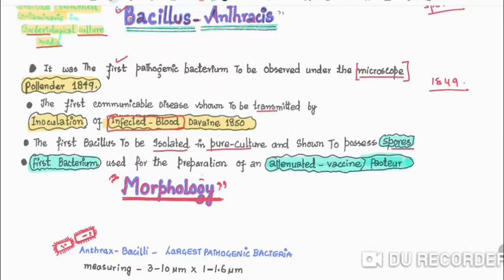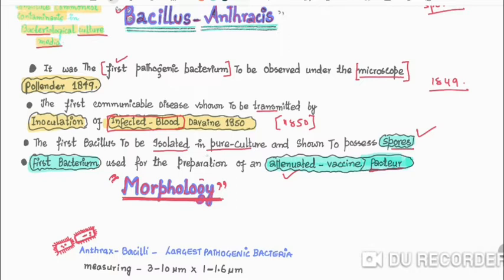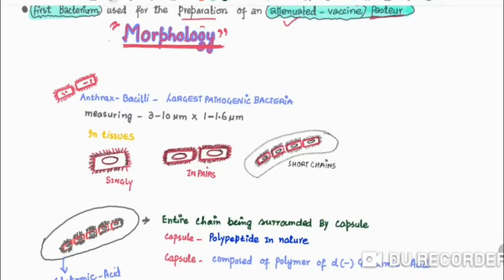Bacillus anthrax is the first bacterium used for the preparation of attenuated vaccines, as demonstrated by Pasteur. In morphology, the anthrax bacillus is the largest pathogenic bacteria. It is a gram positive, spore forming rod measuring 3 to 10 microns by 1 to 1.6 microns.